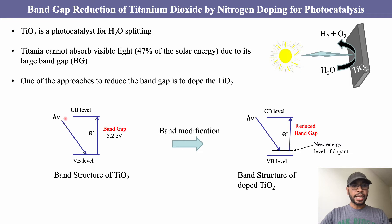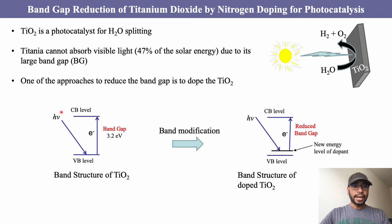The incoming energy of the light must be higher than the band gap. However, the energy of visible light is lower than the band gap, so titanium dioxide cannot absorb sunlight.